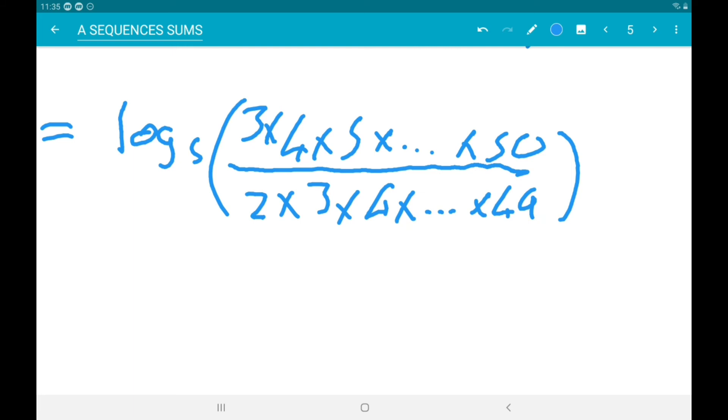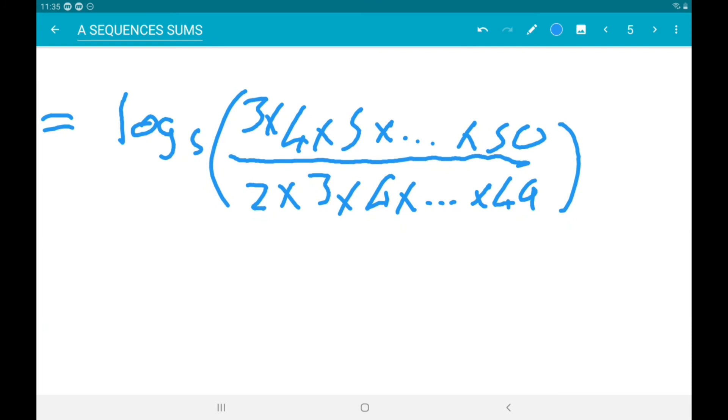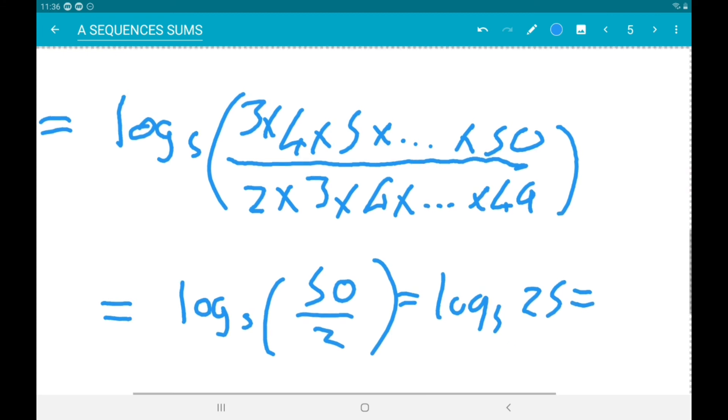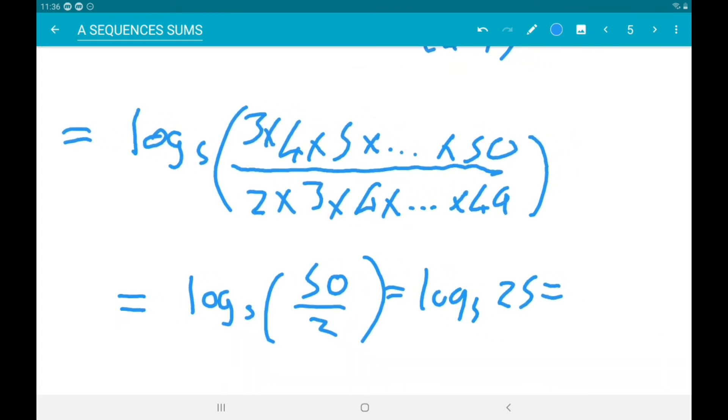So this is actually a log base 5 of 50 over 2, which is log base 5 of 25. Now that is saying what power must we set 5 to get 25, so that's 2. Done.